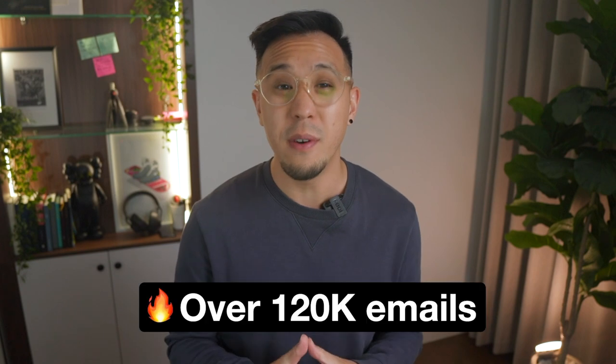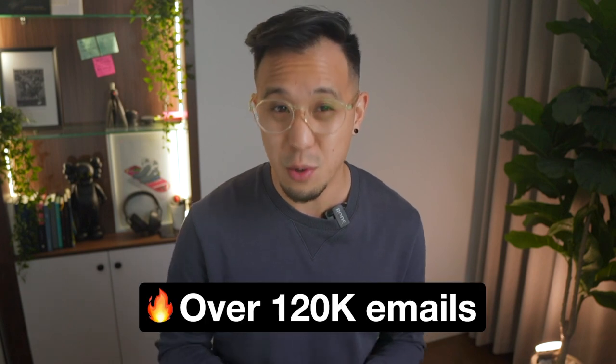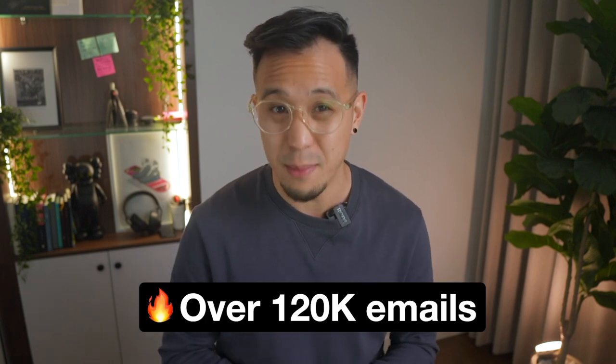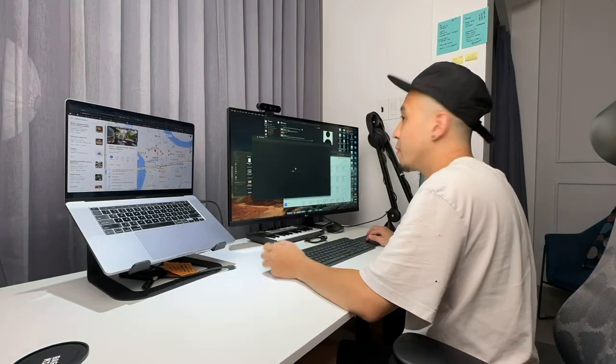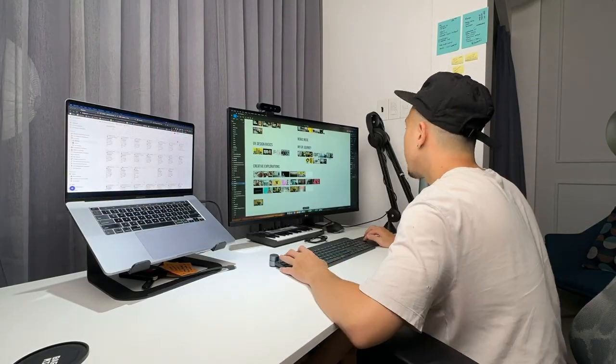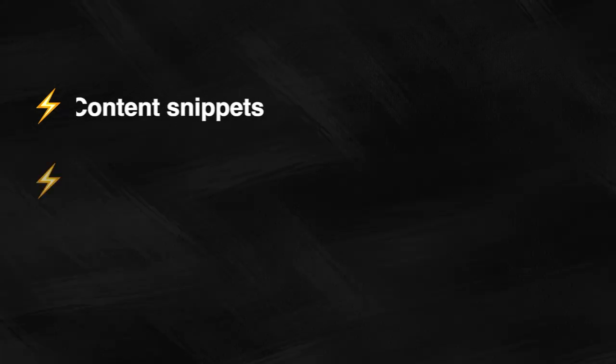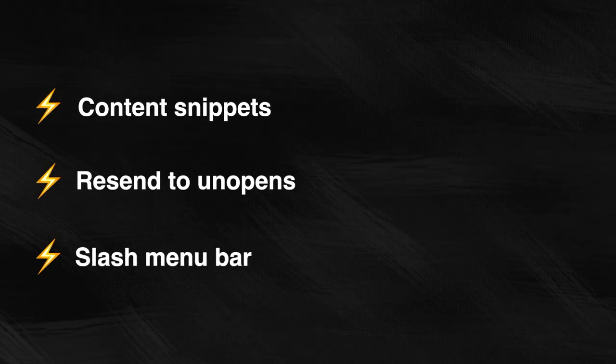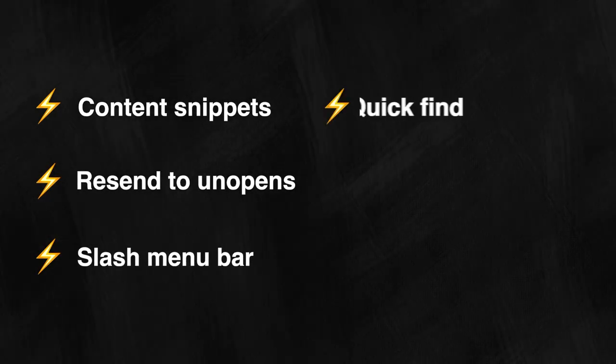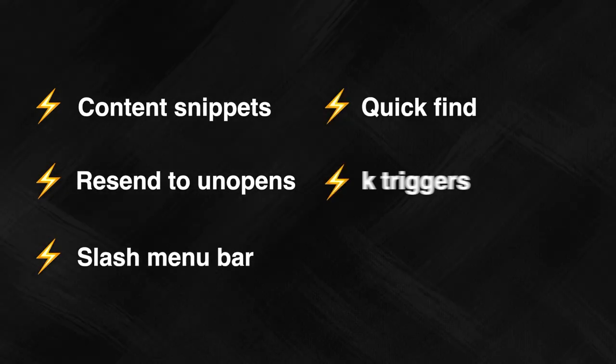Hey, I'm Chris. I've been using ConvertKit for the last year and in the last 90 days I've sent over 120,000 emails. Today I won't just be telling you about these five features but also how I use them in my workflow. These features are content snippets, resend to unopens, slash menu bar, quick find, and link triggers.